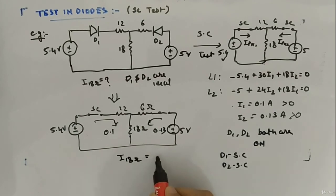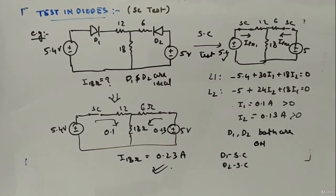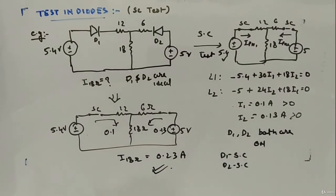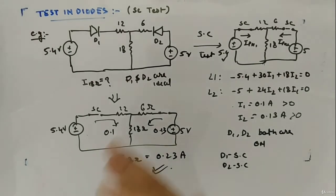In the equivalent circuit, both diodes are short circuited. The current through the 18-ohm resistor is I1 + I2 = 0.1 + 0.13 = 0.23 A. That is how you solve a circuit with diodes — check the states, replace each diode with its equivalent circuit, and then calculate the required currents and voltages.